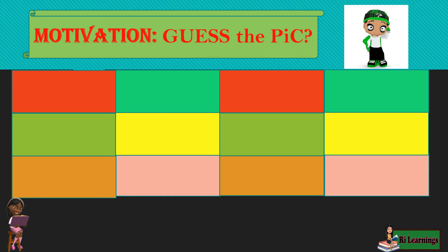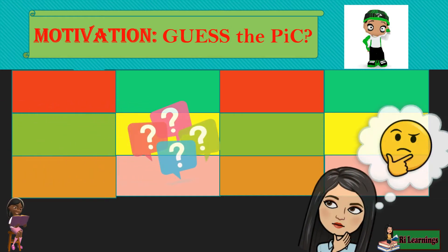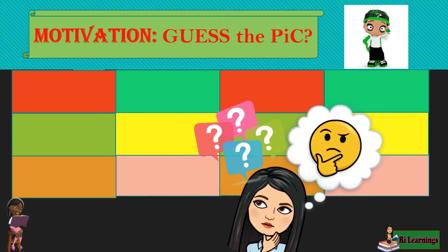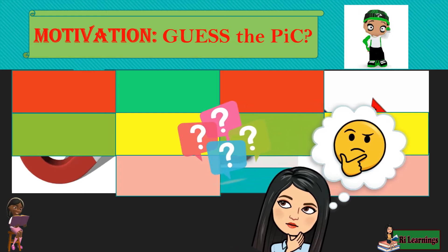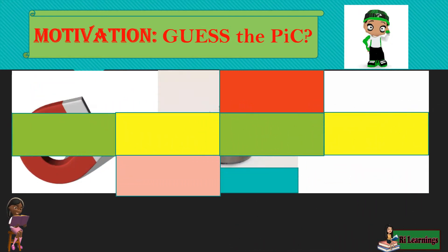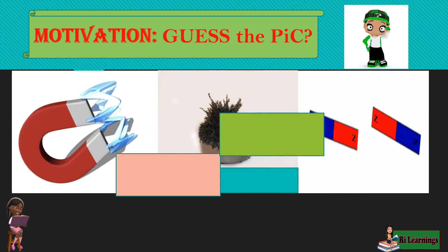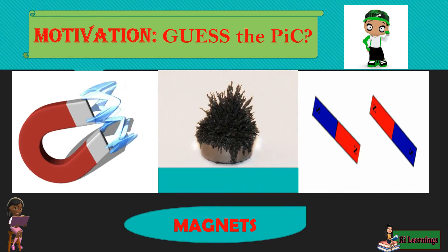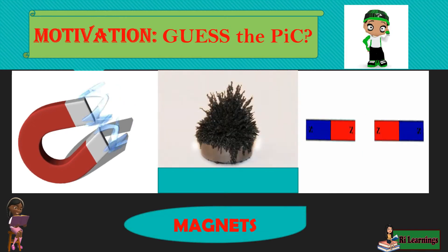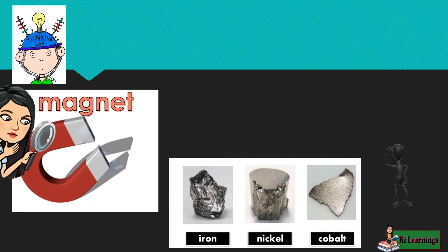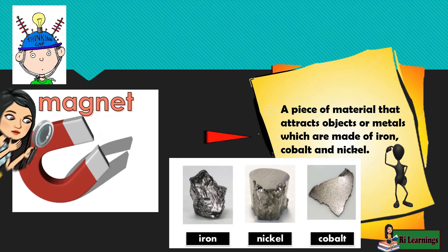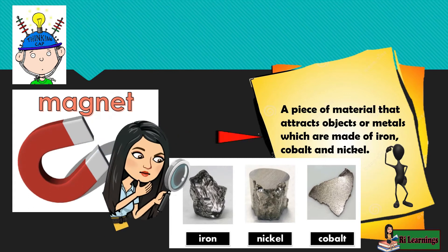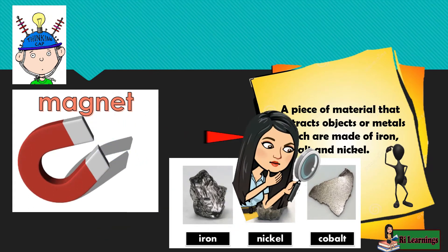Guess the picture. I want you to guess the picture. What do you think are these? Very good! You got it right! These are magnets. Yay! A magnet is a piece of material that attracts objects or metals which are made of iron, cobalt, and nickel.